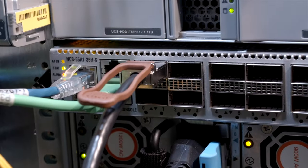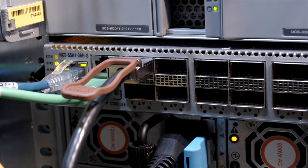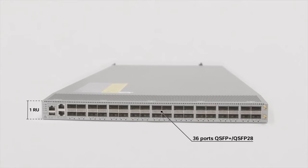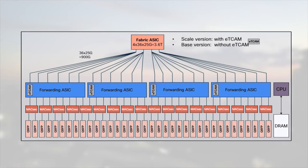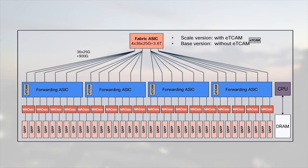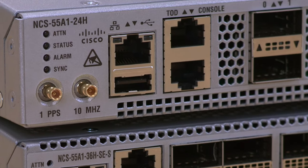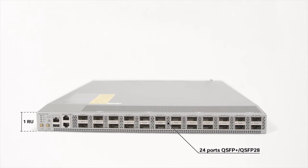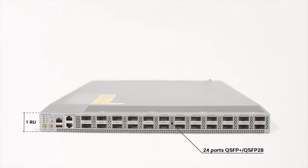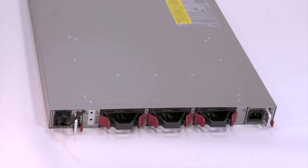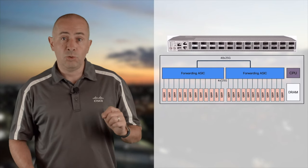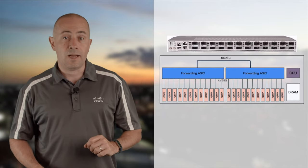The NCS55A1-36H-S and 36H-SC-S: 1RU, 36 ports, 3.6Tbps, supporting MACsec, powered by 4 Jericho Plus NPUs and a single FE3600. The NCS55A1-24H: a smaller version with 24 QSFP, no external TCAM, but with internal memory placing it between SC and non-SC systems, no MACsec, slight oversubscription, powered by 2 Jericho Plus with large LPM connected back-to-back.